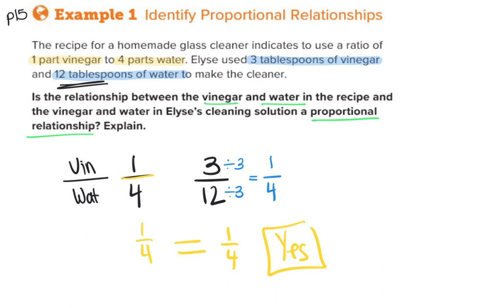You could have also divided these out right away into decimal equivalents. So 1/4, remember is the same as one divided by four and you'd get 0.25. And if I did three divided by 12, I'd also get 0.25. And again, even with the decimal equivalents, we're going to get that same number. So we can say, yes, this is a proportional relationship.